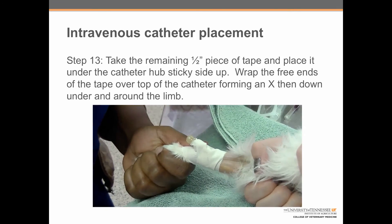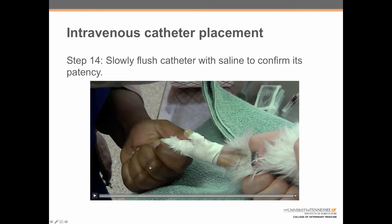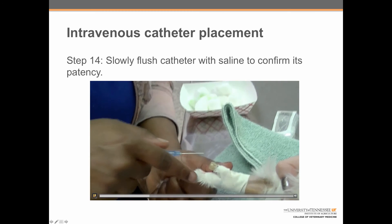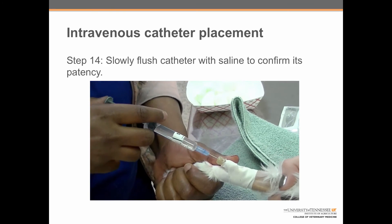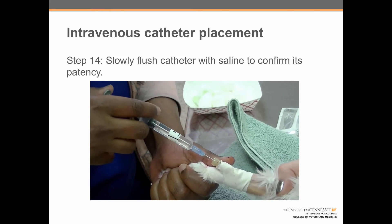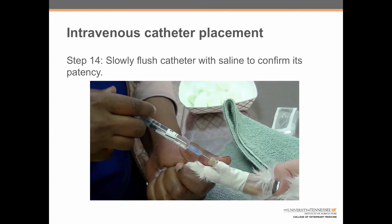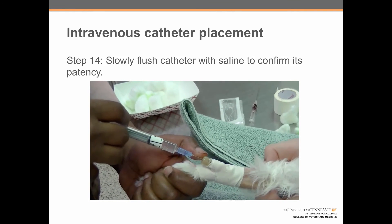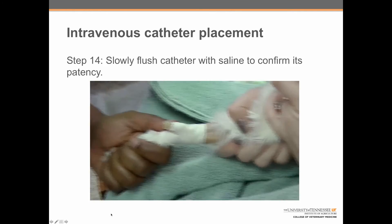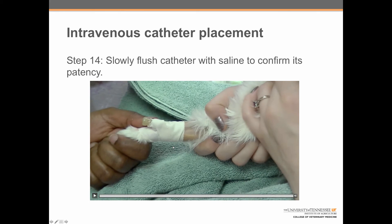Finally, after securing the port, slowly flush the catheter with saline to confirm its patency. It's important to note that steps 10 through 14 are all done quickly to make sure the catheter doesn't clog. Shanna injects fluid through the injection hub to confirm it is flowing freely, and there is no evidence of the vein blowing that would suggest the catheter has come out of place.